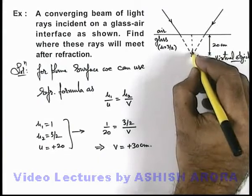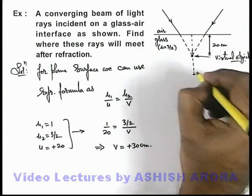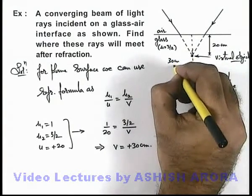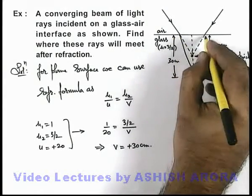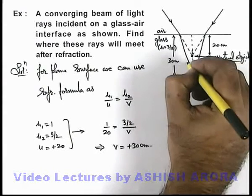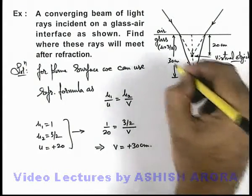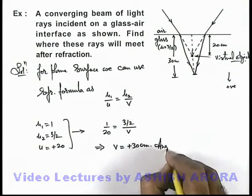That means the light rays will finally meet at a distance 30 centimeters from the surface, or these light rays will be converging at this point and producing a real image at a distance 30 centimeters, and that will be the answer to this problem.